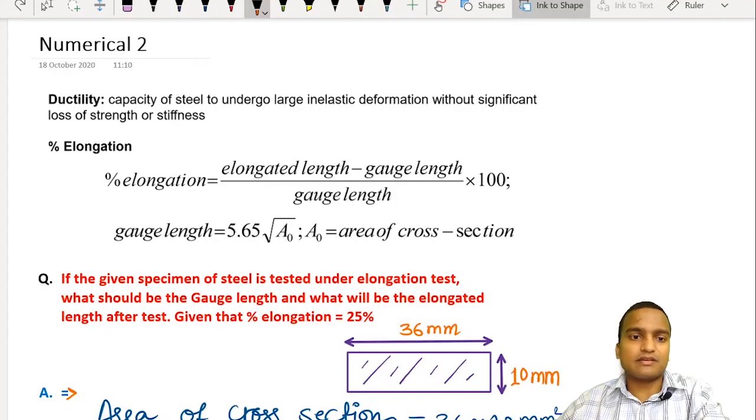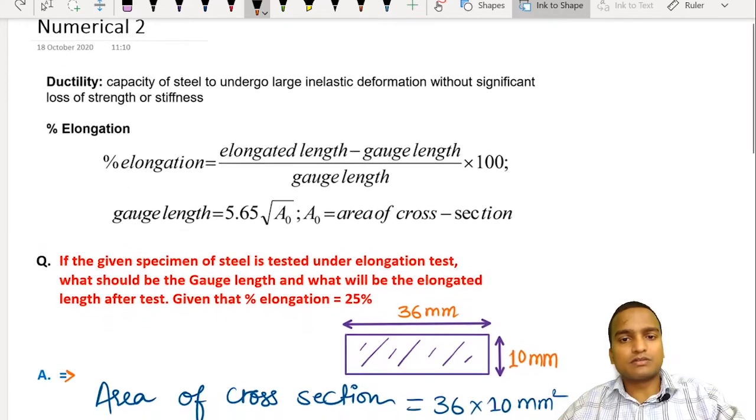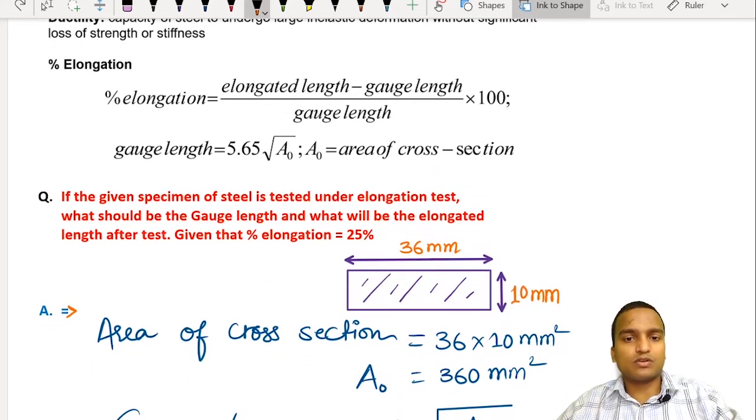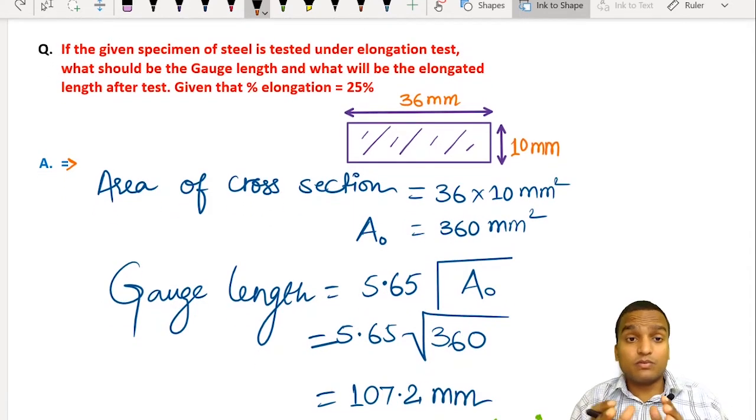Now we come to the second numerical and here we are going to calculate the gauge length and the elongated length. In ductility test, we do this percentage elongation. With the help of this formula, we are trying to solve one more numerical. This numerical says, if the given specimen of steel has a cross section given, it's 36 mm wide and 10 mm thick, is tested under elongation test. What should be the gauge length and what will be the elongated length after test? Given that percentage elongation is 25%. If we have a given cross section, we can't take undefined length of the test specimen. So we take a fixed or a certain length of the specimen and that length is called particularly gauge length.